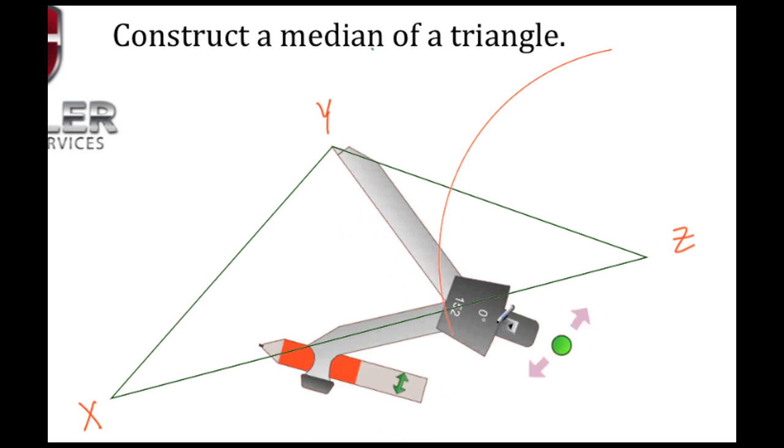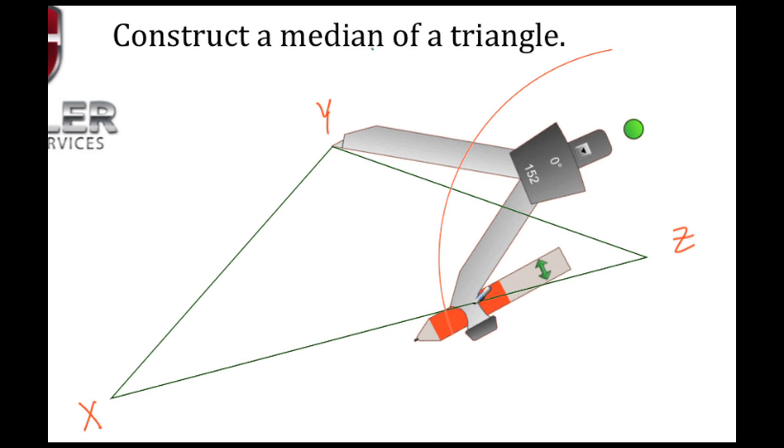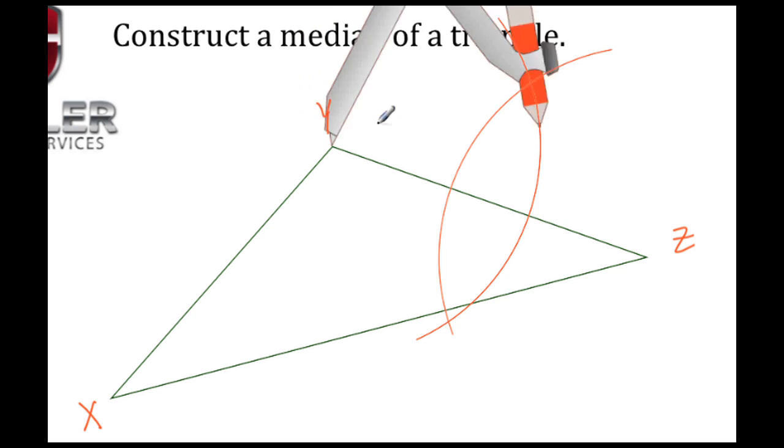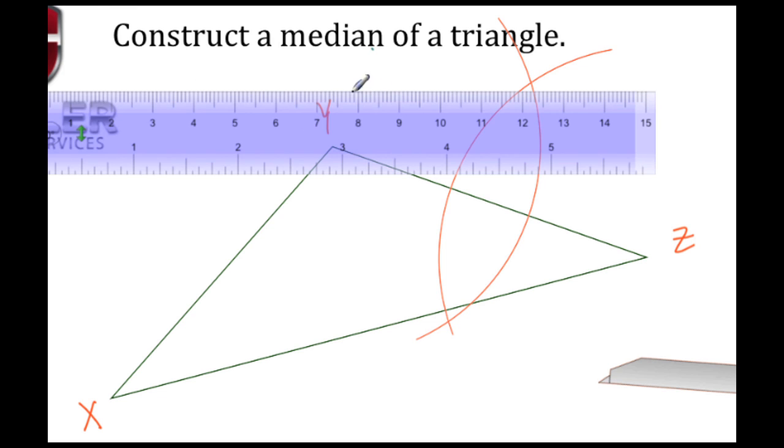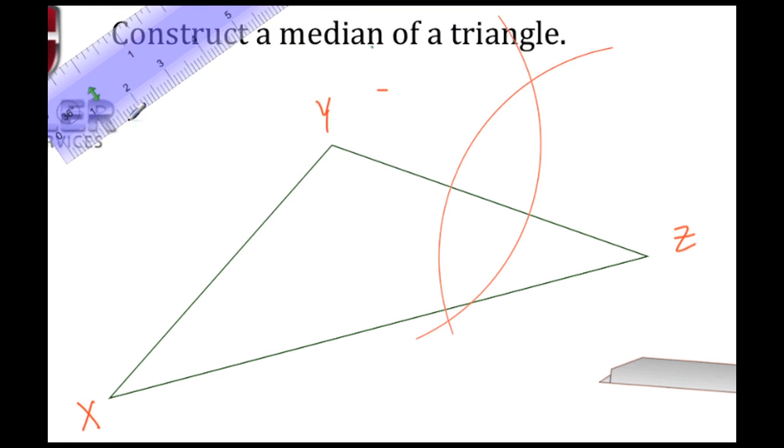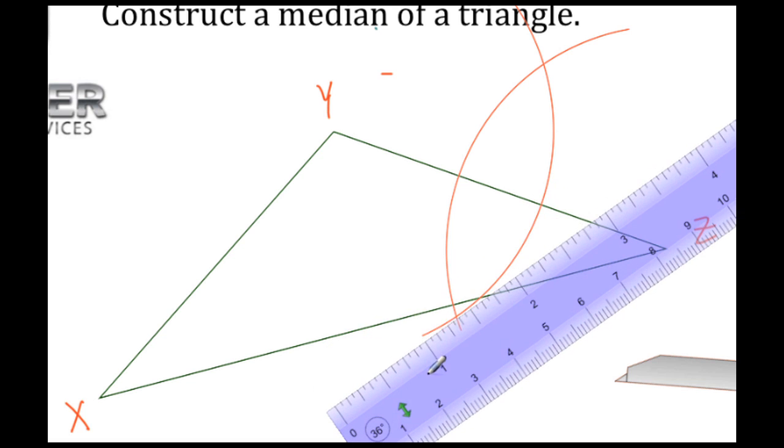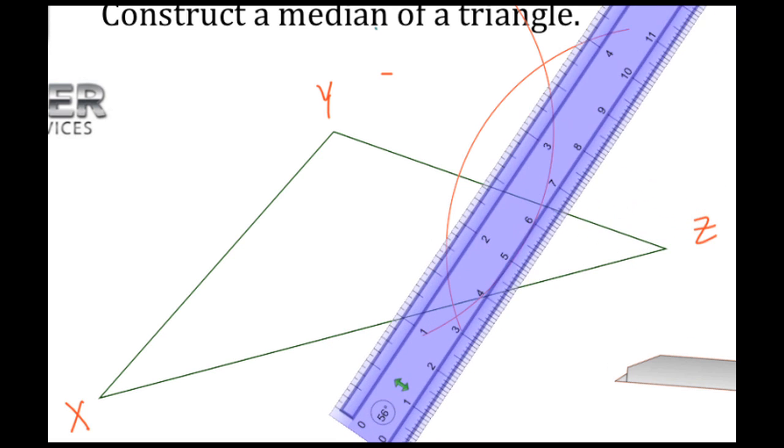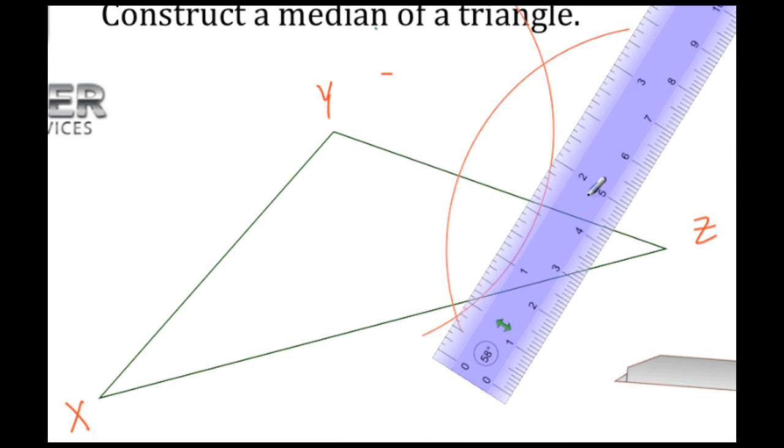Once that's in place, we want to create another arc. Again, we're looking to find out where these two arcs intersect. Once we have that, we're going to take our straightedge and place it over the intersection of those two arcs.